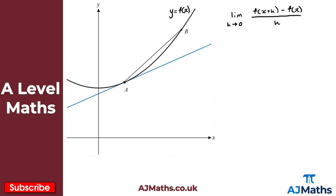This is where differentiation from first principles comes into effect. Let's say point A has the x-coordinate x. If y equals f of x, then point A has coordinates (x, f(x)). If we consider point B and use the normal triangle method of finding the gradient, that gives us an estimate. What we're concerned about is what happens as we get closer and closer to point A.